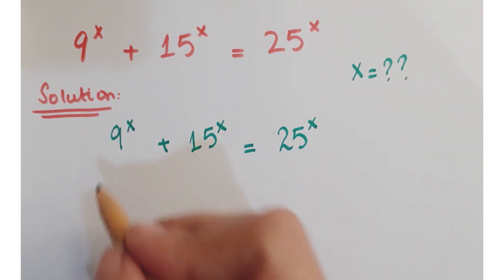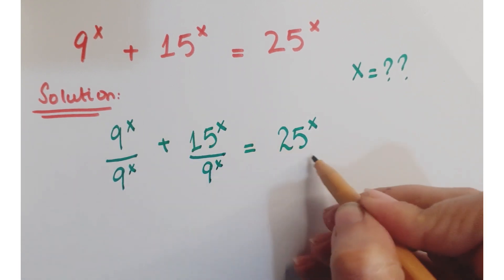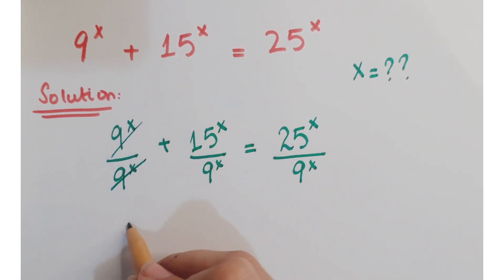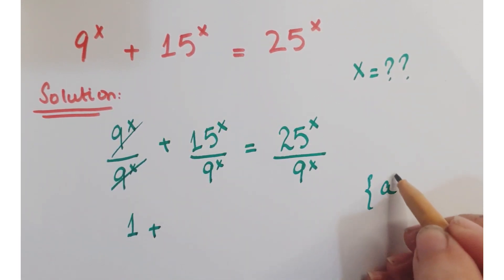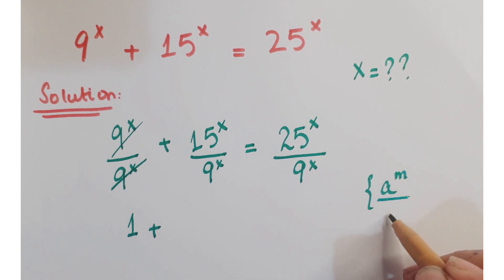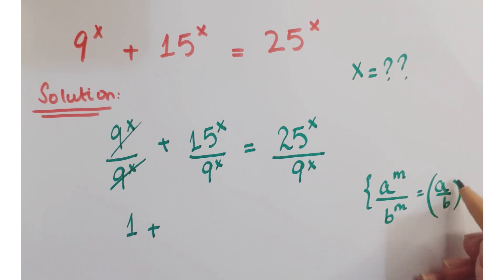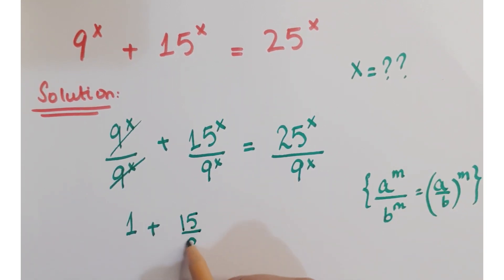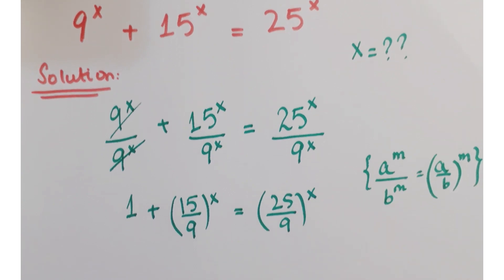Now, first of all, divide by 9 to the power x on both sides. So this term and this term get cancelled, so you get 1 here. As you know, a to the power m upon b to the power m can be written as (a upon b) whole to the power m. So here you get (15 upon 9) whole to the power x equals (25 upon 9) whole to the power x.